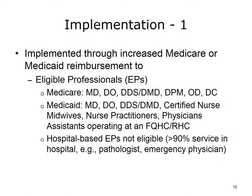The Meaningful Use program provides reimbursement to eligible professionals, or EPs, and eligible hospitals, or EHs, through the Medicare and Medicaid programs. Each program has slightly different rules. Under Medicare, eligible professionals include MDs, DOs, dentists, podiatrists, optometrists, and chiropractors.